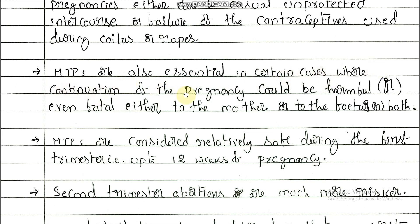MTPs are especially required in cases where continuation of the pregnancy could be harmful or even fatal. Sometimes a normal pregnancy has no problem, so no MTP is required. But MTPs are required when there is risk of death or harm to the mother, to the fetus, or in conditions where both mother and fetus face chances of death or harm — in that situation MTP is compulsory.